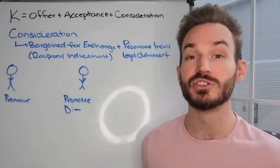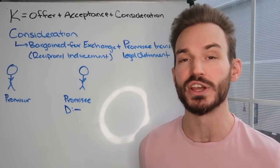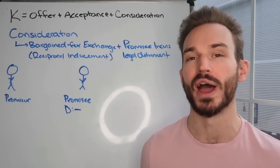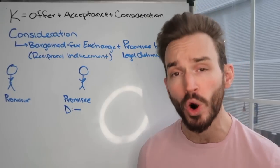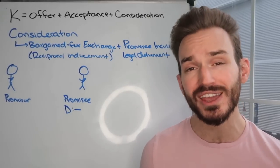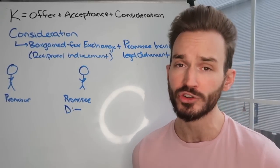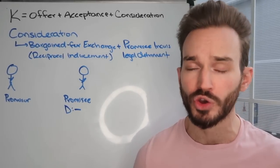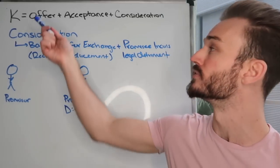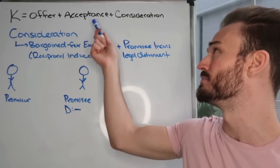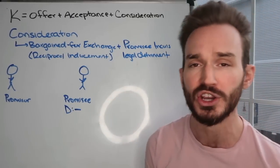How do you analyze consideration on a contract's essay question? To form a traditional enforceable contract, there are three requirements: offer, acceptance, and consideration.